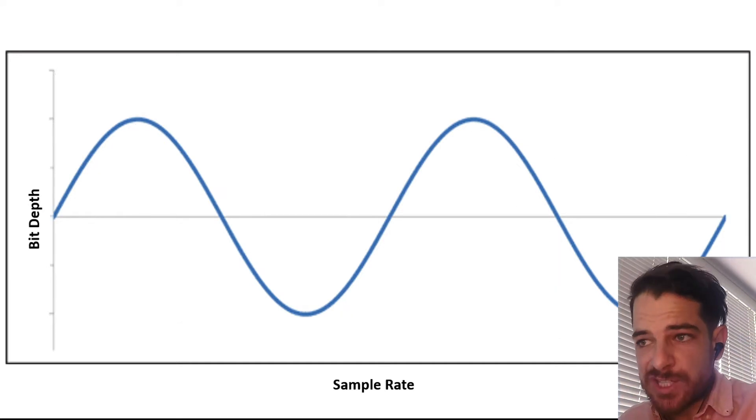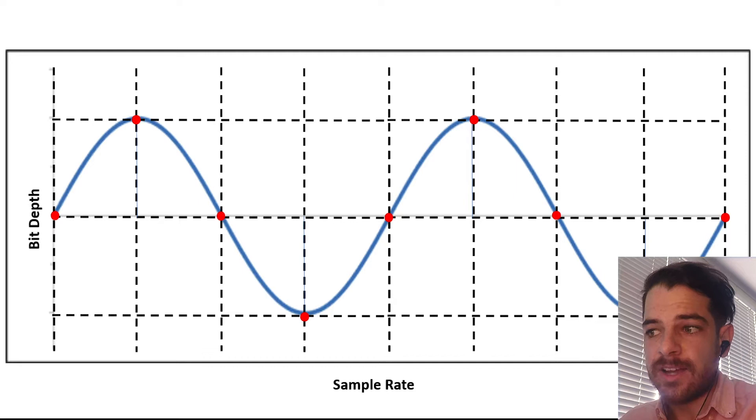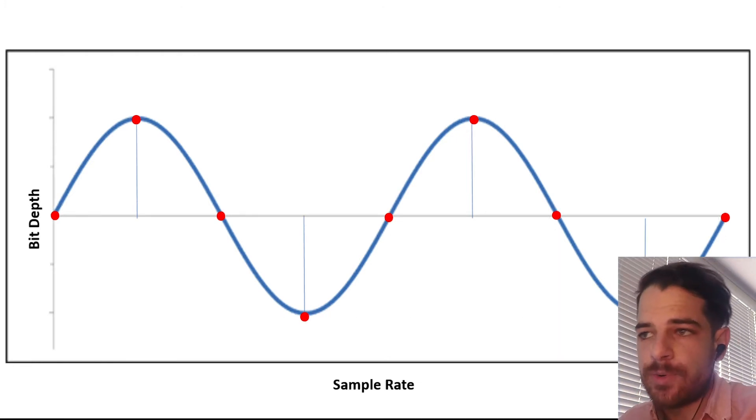So let's have a look at this in motion. Say if I have a low bit depth and a low sample rate, if I were to take points along that curve, and I'm taking a point at every defined sample rate point here, here, here, here, here, you get the idea. That's how often I'm taking one of these data points. You'll see that I get a few points along the curve.